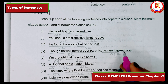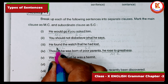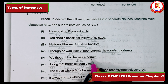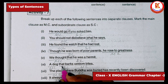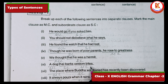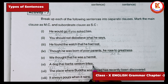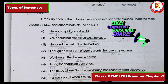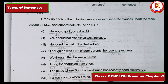'Though he was born of poor parents, he rose to greatness' — 'though he was born of poor parents' is SC; 'he rose to greatness' is MC. 'We thought that he was a hermit' — 'that he was a hermit' is SC. 'A dog that barks seldom bites' — 'that barks' is SC; 'a dog...seldom bites' is MC. 'The place where Buddha was buried has recently been discovered' — 'where Buddha was buried' is SC. 'It always pours when it rains' — 'when it rains' is SC.